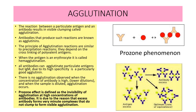When the antigen is an erythrocyte, it is called hemagglutination. All antibodies can agglutinate particulate antigens, but IgM, due to its high specificity, is a good agglutinin.